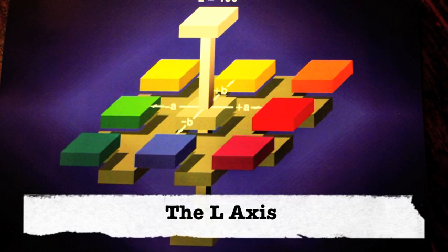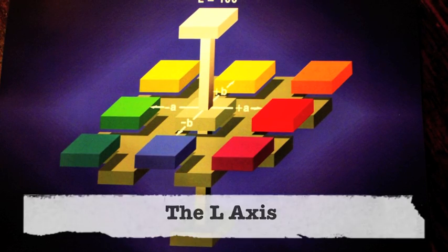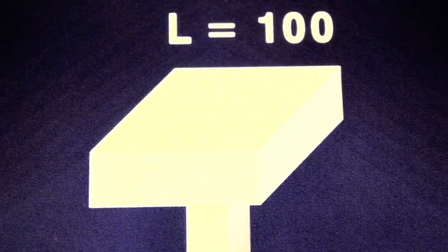The L-axis is a measure of the lightness of your product. On the L-axis, L equals 0 is total absorption, whereas pure white would equal 100.